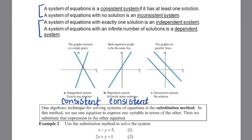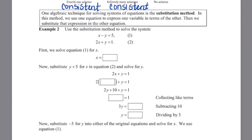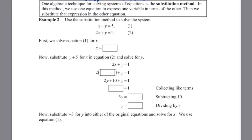If the graphs are parallel, it is an inconsistent system since there are no solutions. One algebraic technique for solving systems of equations is the substitution method. In this method, we use one equation to express one variable in terms of the other, then substitute that expression to continue solving. This is especially helpful since graphing doesn't always land on a nice whole-number crosshair — it's useful when solutions may be fractions or decimals.